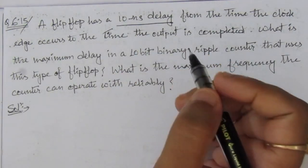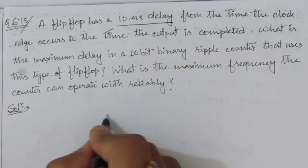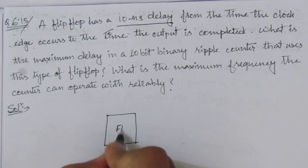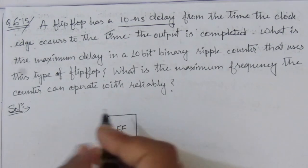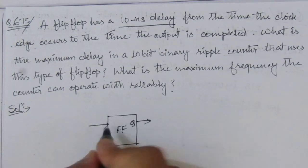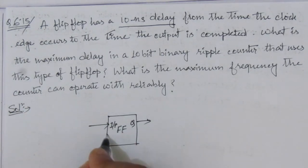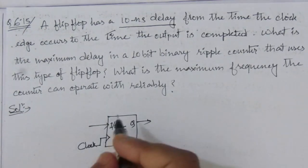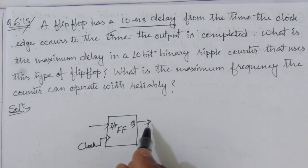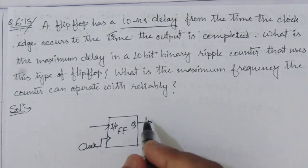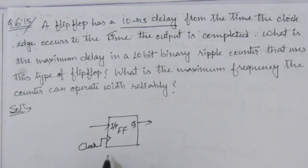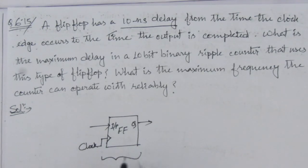We are given that each flip-flop has a 10 nanosecond delay. Suppose we have one flip-flop with one input, one output Q, and a clock input. After receiving the clock, depending on the input, it will generate output Q. The time from receiving the clock to changing its output is 10 nanoseconds.